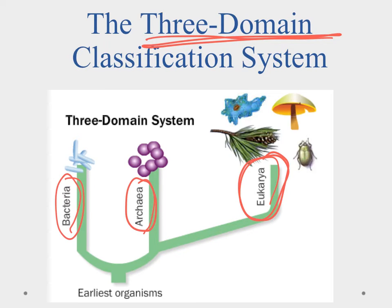Then we get into the eukarya, and that's what we are. Those are where we see multicellular organisms; we start seeing the organelles in the cells and things of that nature. So we do have our three domains. The lessons will go into a little bit more detail, and we'll see you at the next video.